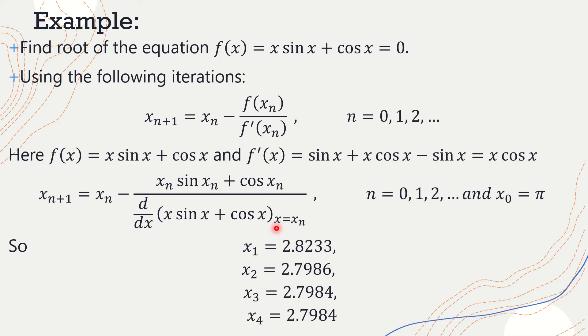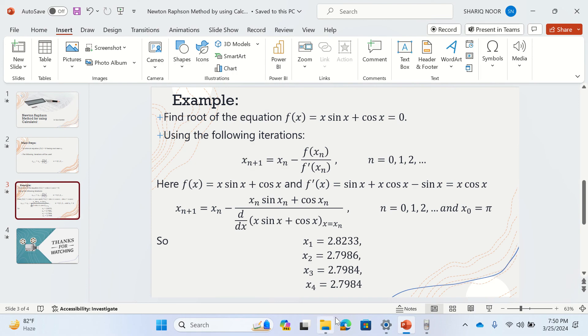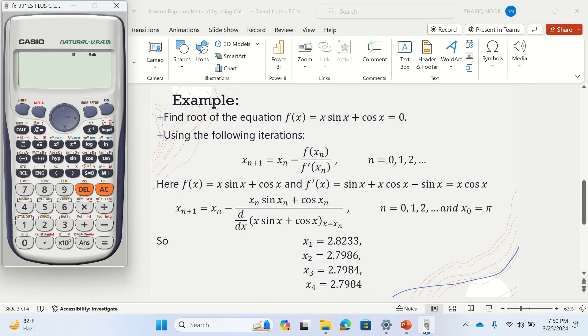So now let me do this by using calculator. The first step is you need to convert the mode of calculator to be in maths mode. So you should go for 1. And the calculator should be in radian mode as well. Because we are solving in this case a transcendental equation, the mode should be in radians.